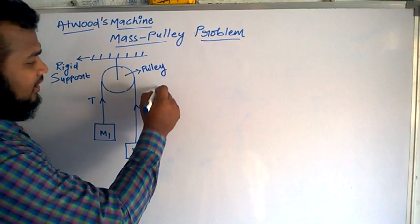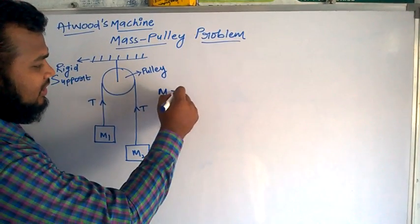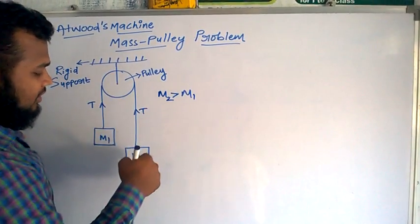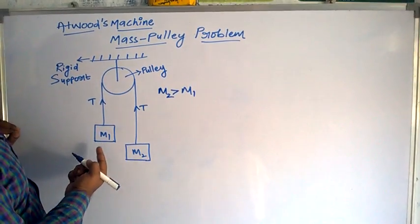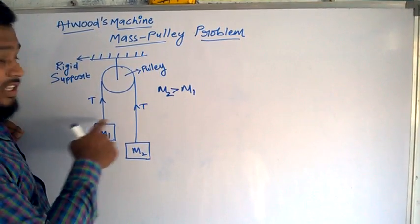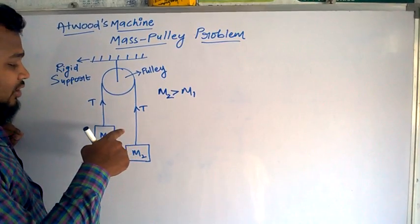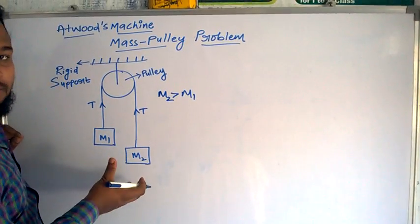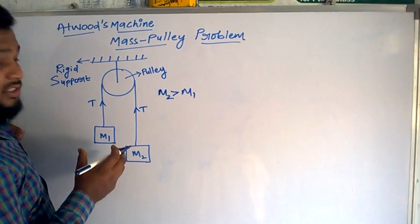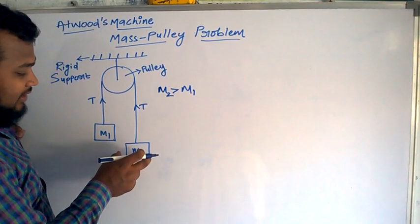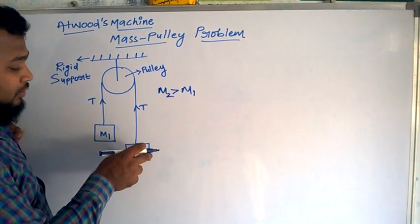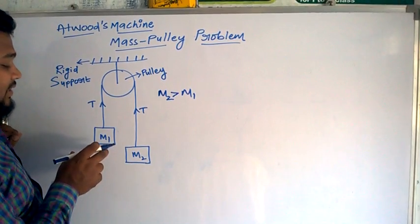Let's say m2 is greater than m1, then this is going to go down and this is going to come up. Since these two are connected, I want to find out the acceleration of the system. The acceleration of m2 moving down is the same as the acceleration of m1 moving up.